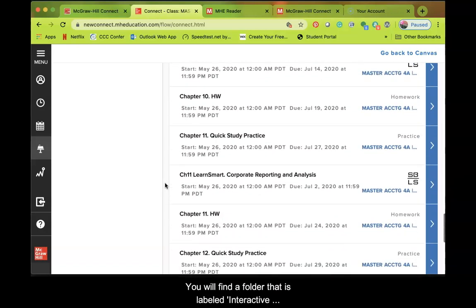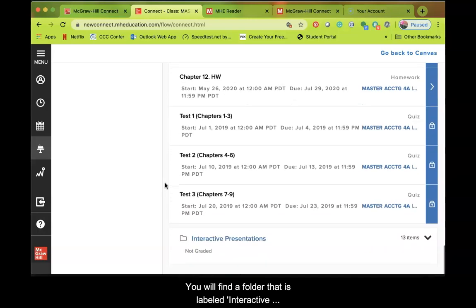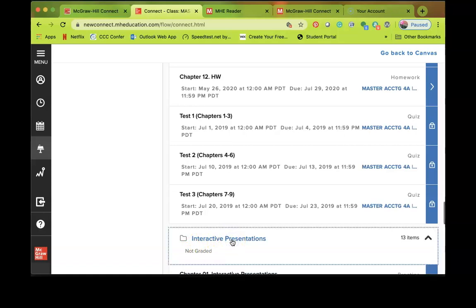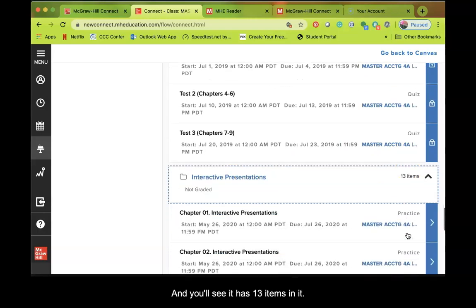You will find a folder that is labeled Interactive Presentations. You will see here it's not graded. This is not counted towards your grade. This is just an alternative to reading the eBook or SmartBook. So you're going to click on that folder and you'll see that it has 13 items in it.